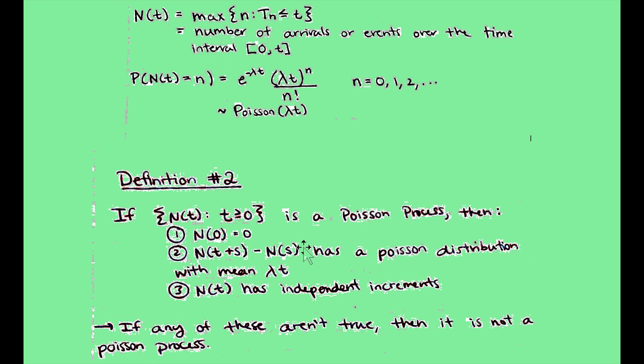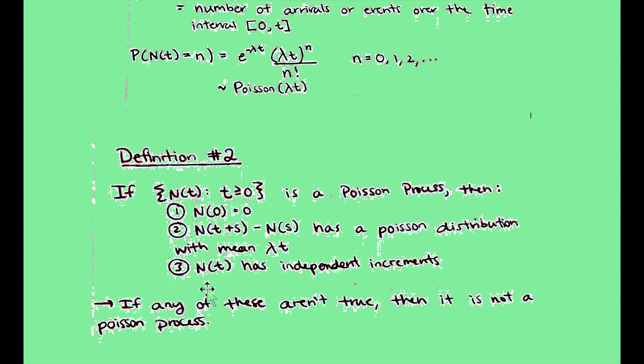And last of all, N(t) has independent increments. So for every increment of N(t) you have, they're all actually going to be independent. And if all of these are true, then you have a Poisson process. But also, if any of these rules aren't true, then you're not going to have a Poisson process.